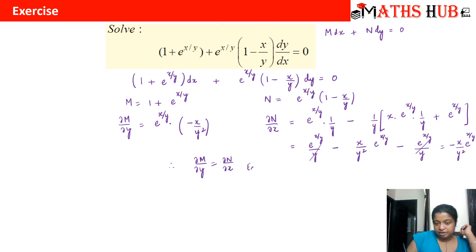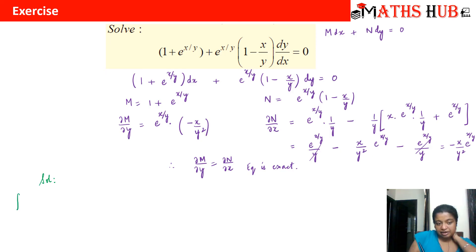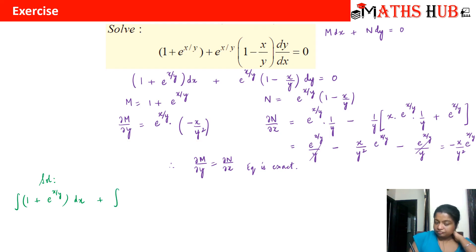This shows that ∂M/∂y equals ∂N/∂x, so the given equation is exact. The solution is calculated as the integration of M — that is, ∫(1 + e^(x/y)) dx with y kept constant — plus the integral of terms of N not containing x. Since both terms of N contain x, we take no additional terms.